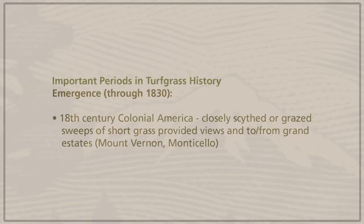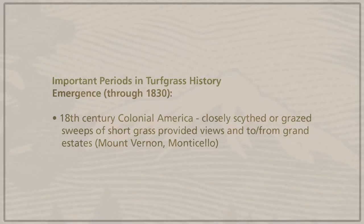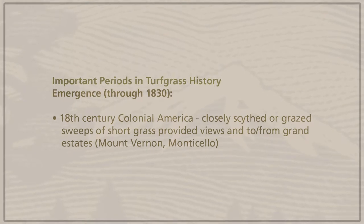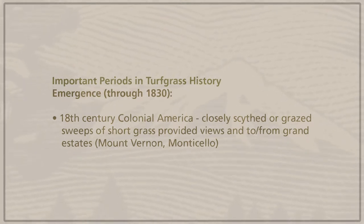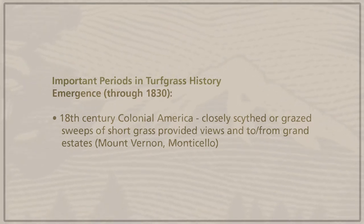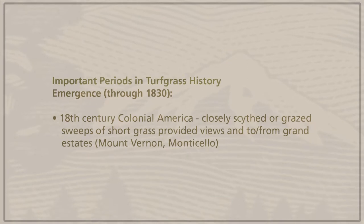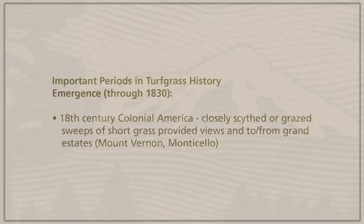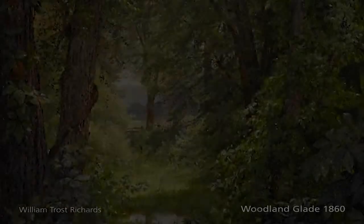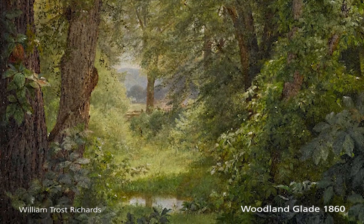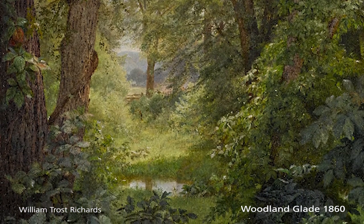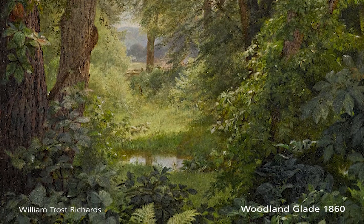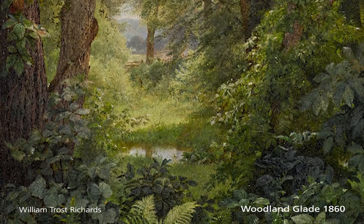In this country, these 18th century estates belonged to some of the more prominent citizens, such as George Washington at Mount Vernon and Thomas Jefferson at Monticello. This artwork shows some of that low-grazed turf or grass areas.